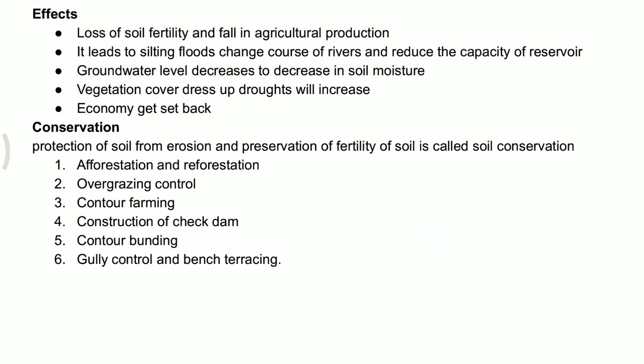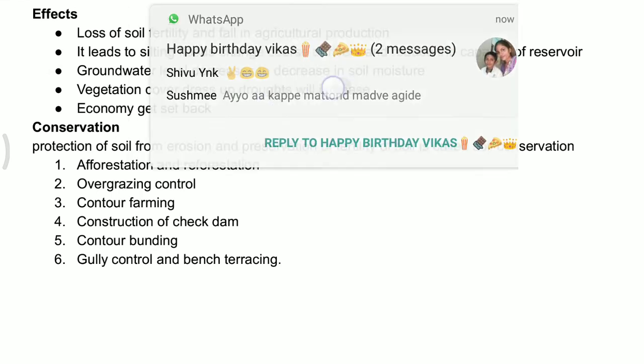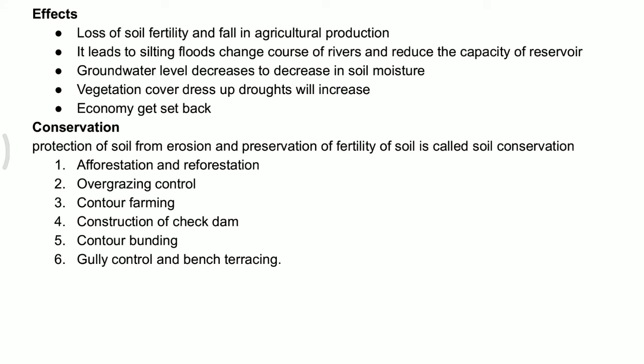Vegetation cover dries up, droughts increase, and the economy gets a setback because of soil erosion. How can we conserve soil — how can we control soil erosion, protect soil from erosion, and preserve fertility? The first method is afforestation and reforestation. Overgrazing should be controlled — we should not graze animals frequently in a particular place, as that leads to erosion.